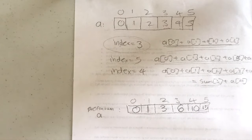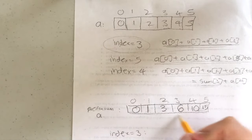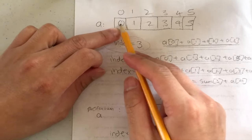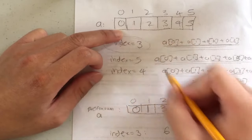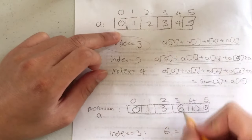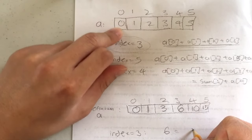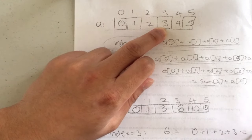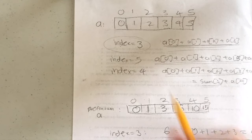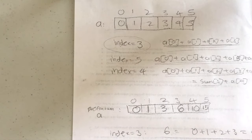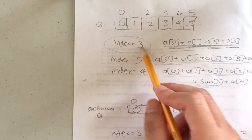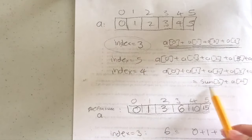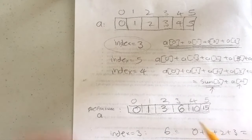Now given an index, I just return the prefix sum value at that index. For index three, I return six. Let's verify: summing A[0] + A[1] + A[2] + A[3] = zero + one + two + three = six. The prefix sum does correctly compute the sum of all values up to the given index. It lets us store each running total so we never recompute it.